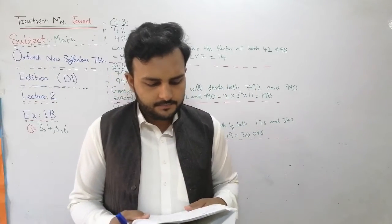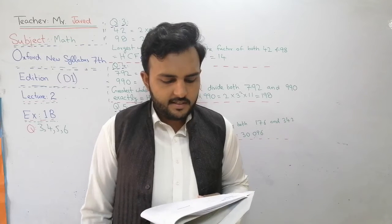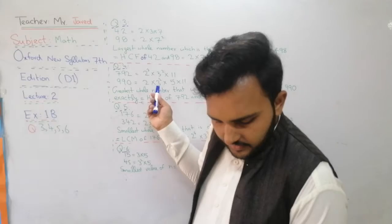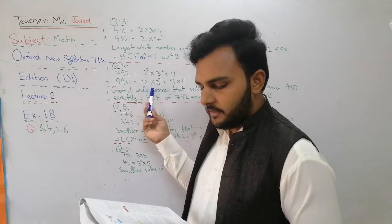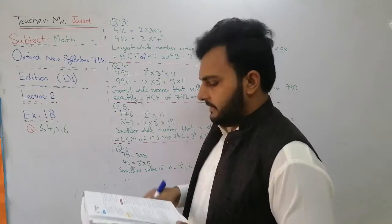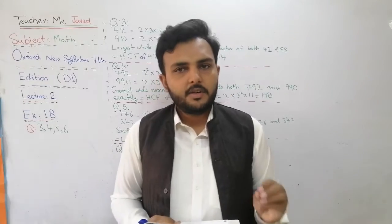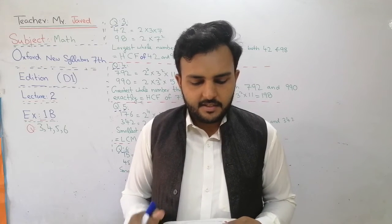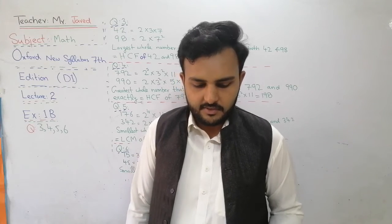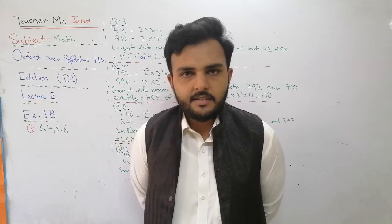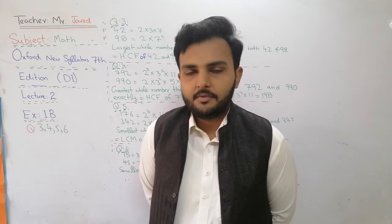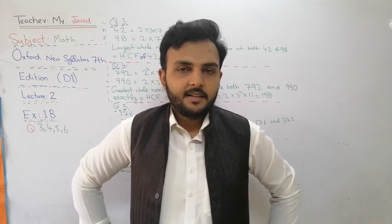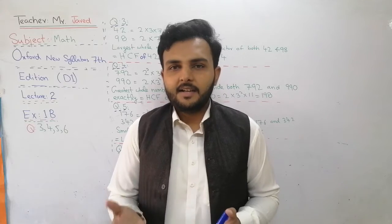In question number 4, the numbers 792 and 990 are written as the product of their prime factors: 792 = 2³ × 3² × 11, and 990 = 2 × 3² × 5 × 11. These two numbers are presented with their prime factors. We have to find the greatest whole number that will divide both 792 and 990 exactly — meaning it is divisible with remainder 0. The greatest whole number is basically the HCF, the Highest Common Factor.